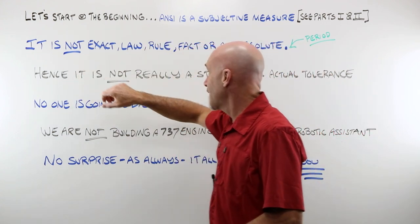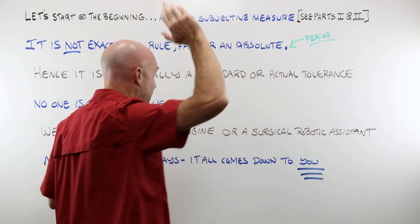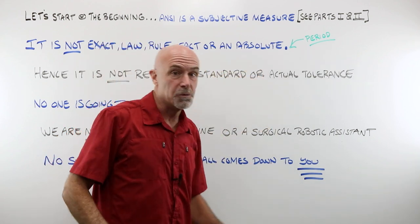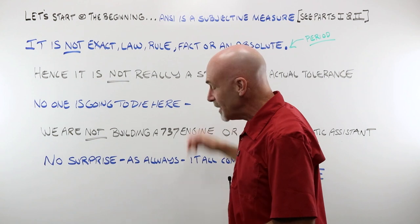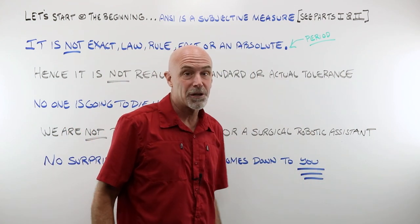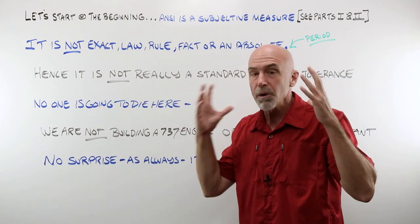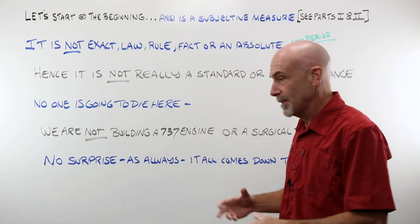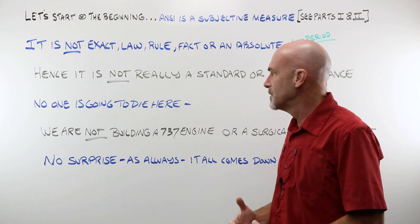ANSI is not exact, it's not a law, it's not a rule, it's not a fact, or an absolute. Period. Hence, it is not really a standard or an actual tolerance. I mean, it's so important to get your head around, and actually kind of hard to do, for a lot of different reasons.